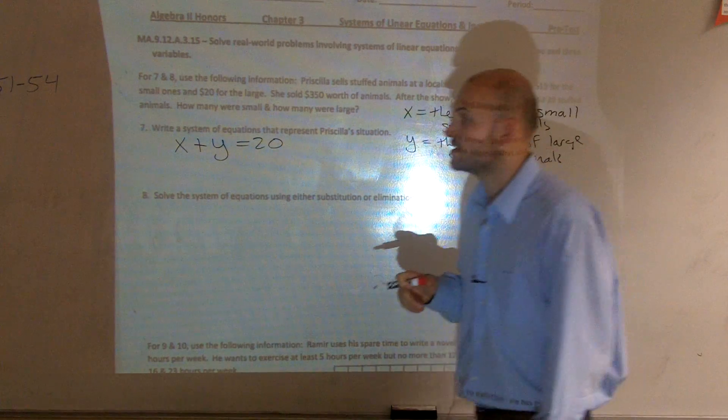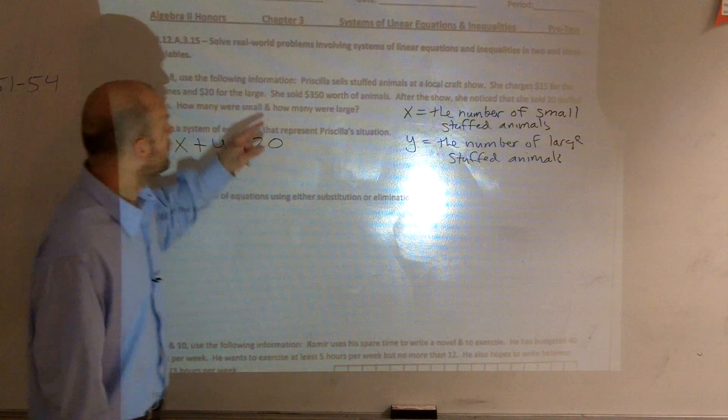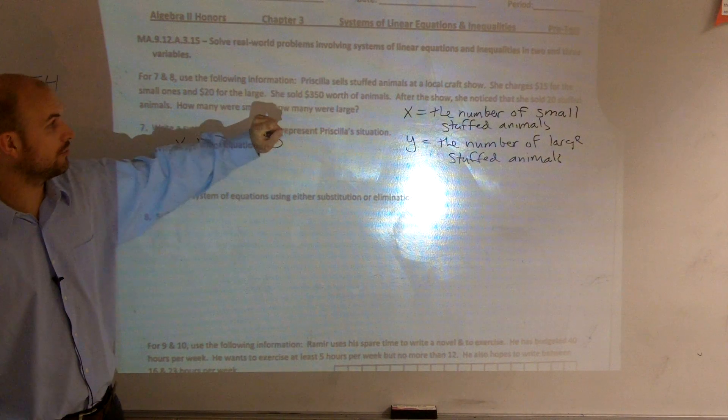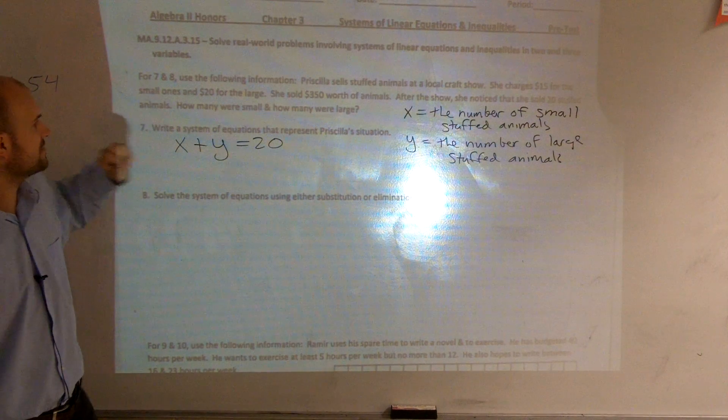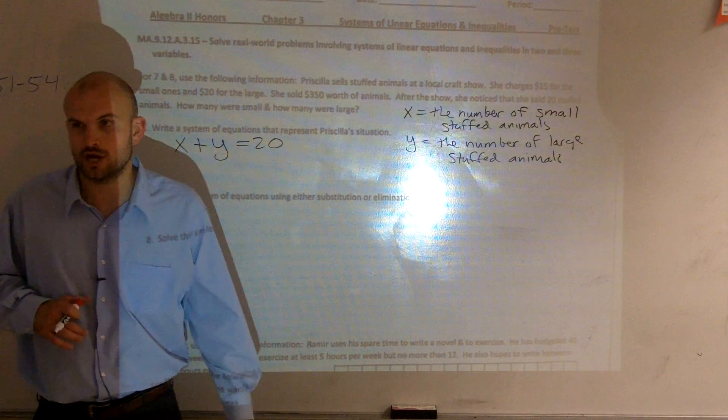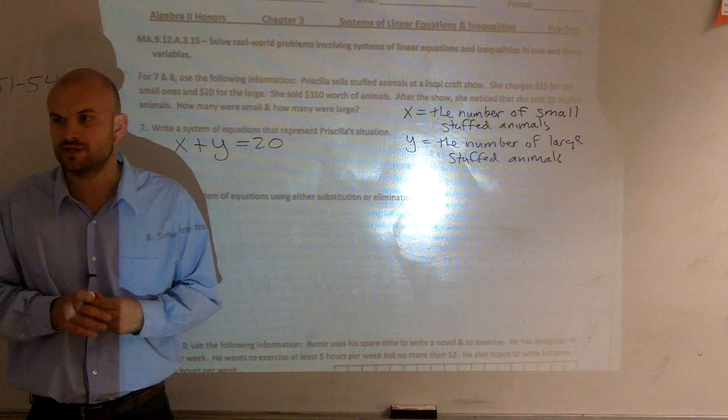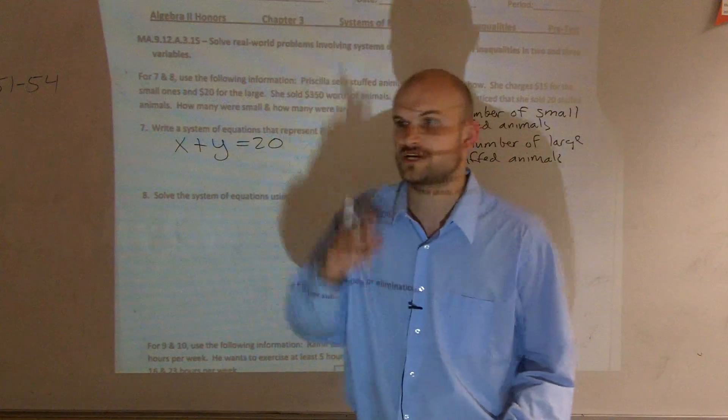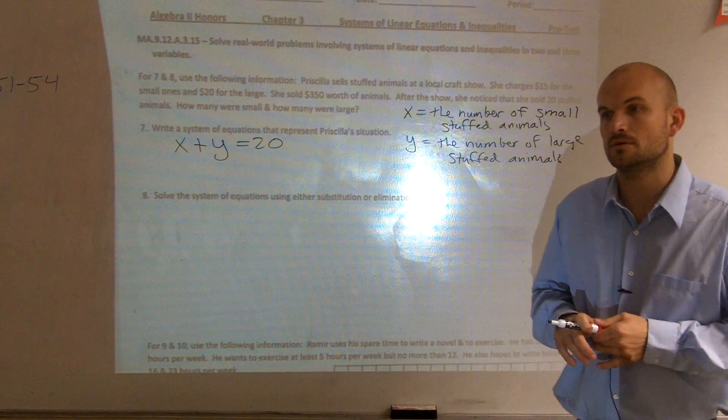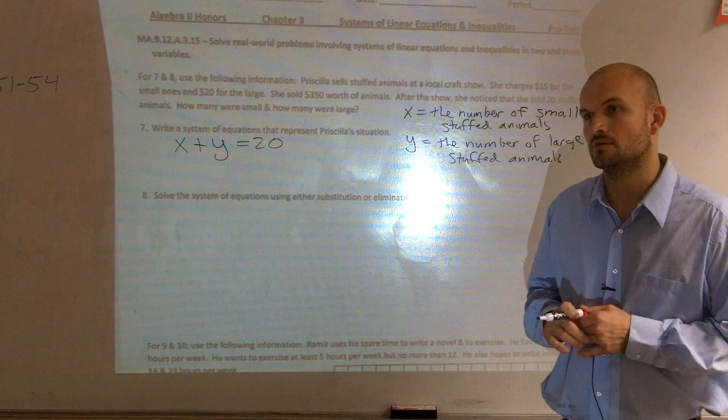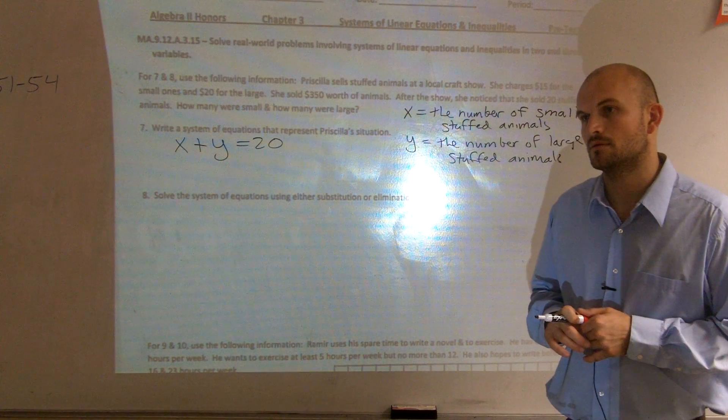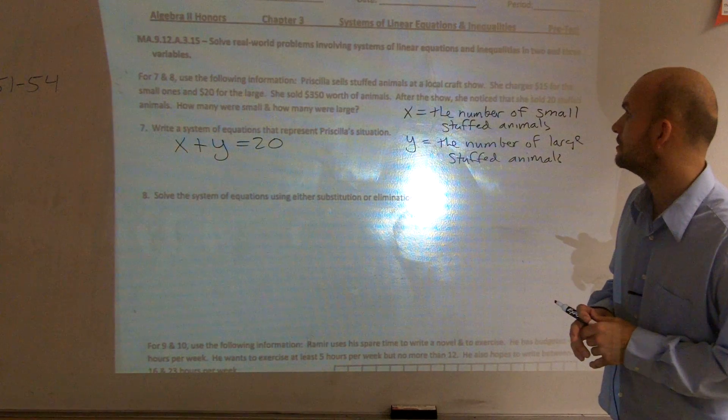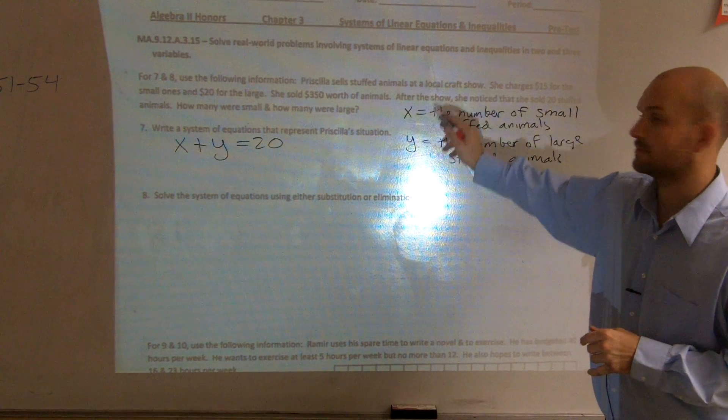Now, what else, other information are we provided for this problem? We're provided that she sold $350 worth of animals. And she charges $15 for the small ones and 20 for the large. Does anybody have an idea how can I write an expression for charging $15 per small one and 20 for the large?